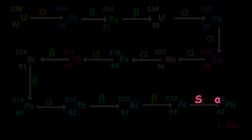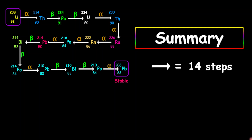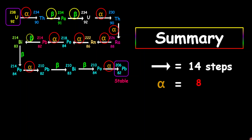Now let's look at a summary of the entire decay series. Starting from uranium-238 into lead-206, if you check the number of arrows, we have 14 arrows, which means 14 steps or 14 total decays. Out of these 14, we have a total of 8 alpha decays. The remaining portion is beta — and we have a total of 6 beta decays.